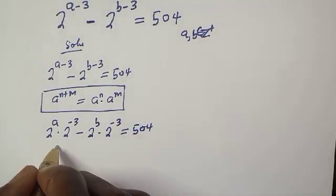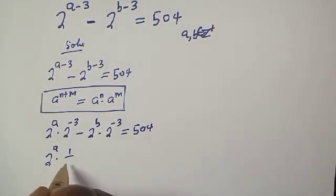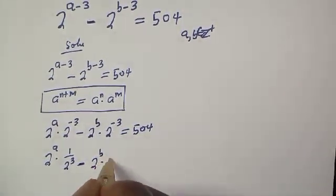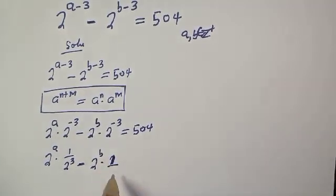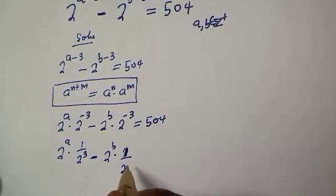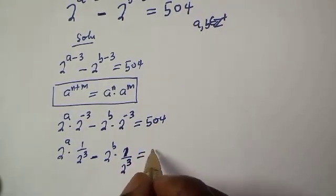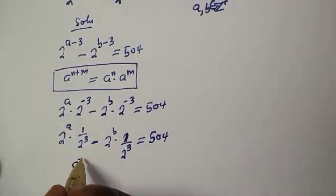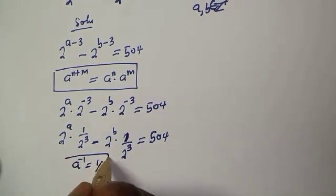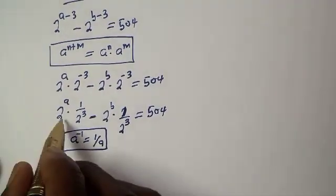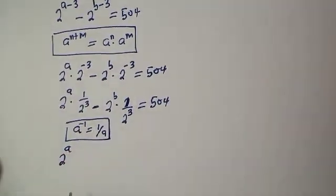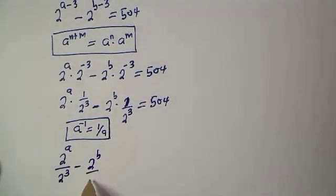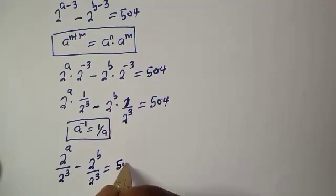This gives us 2 raised to power a multiplied by 1 over 2 raised to power 3, minus 2 raised to power b multiplied by 1 over 2 raised to power 3, equals 504. This is because a raised to power minus 1 is equal to 1 over a. So this can be written as 2 raised to power a over 2 raised to power 3, minus 2 raised to power b over 2 raised to power 3, equals 504.